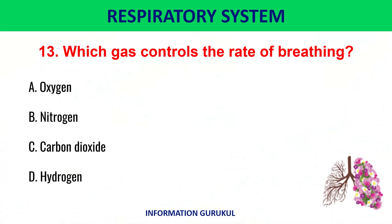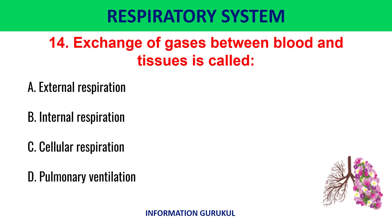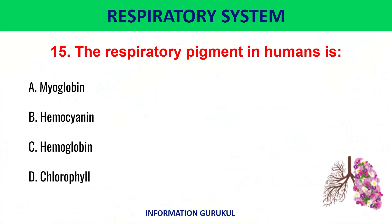Which gas controls the rate of breathing? Carbon dioxide. Exchange of gases between blood and tissues is called internal respiration. The respiratory pigment in humans is hemoglobin.